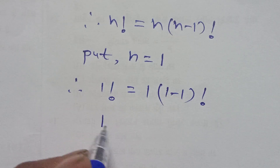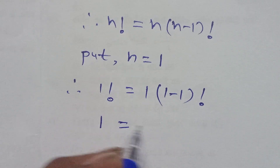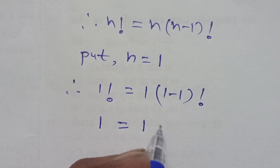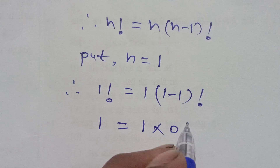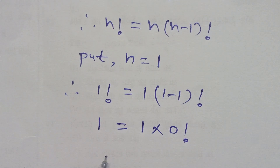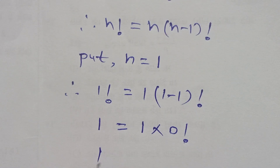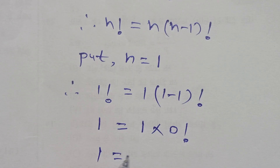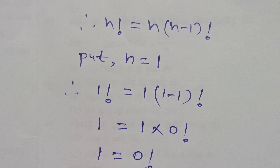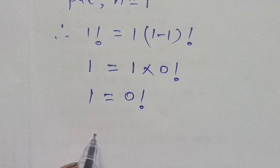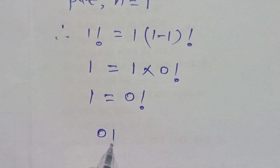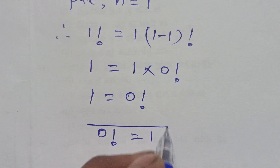Since 1 factorial equals 1, we have 1 = 1 × 0 factorial, therefore 0 factorial is equal to 1.